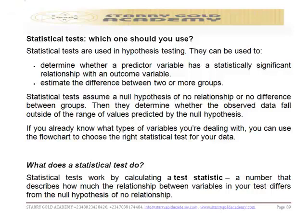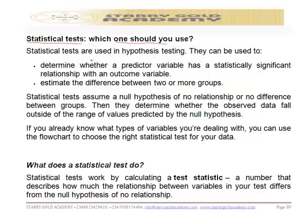Welcome to class. In this class, we want to look at statistical tests — which one should you use. Statistical tests are used in hypothesis testing. They can be used to determine whether a predictor variable has a statistically significant relationship with an outcome variable, and also we use statistical tests to estimate the difference between two or more groups. Statistical tests assume a null hypothesis of no relationship or no difference between groups.